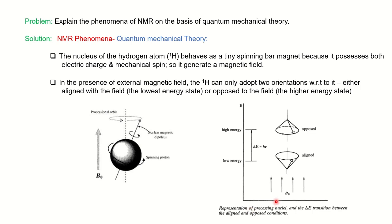This is the representation of precessional nuclei. Along with the aligned and opposed orientations, there is a slower wobbling motion — like a spinning top rotating on its axis. Similarly, the nucleus will start rotating or spinning around its precessional orbit. This motion is called precessional motion, and because of that, the nucleus will possess the precessional frequency. ΔE is the energy transition between the aligned and opposed conditions.